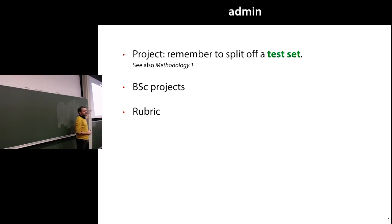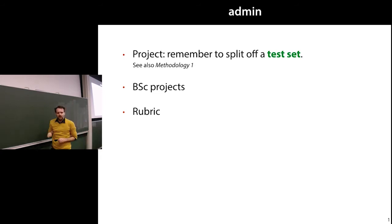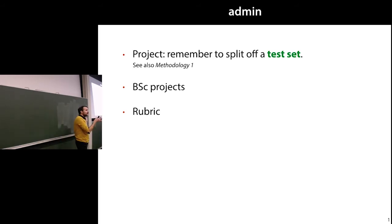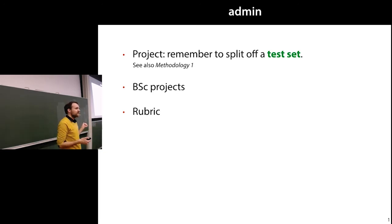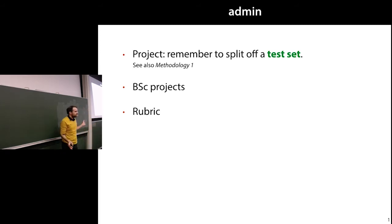That's only for computer science students — the IMM students have already started their bachelor project. Finally, the rubric. There's a rubric online on Canvas which we will use to get a preliminary grade for the report. It always surprises me how many students don't look at the rubric when they start, because it's basically a step-by-step guide to getting a good grade. It's 10 minutes' investment and you'll probably get two extra points just for reading it. So please have a look at that.